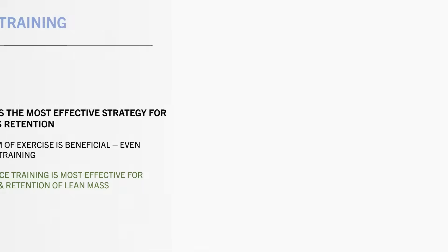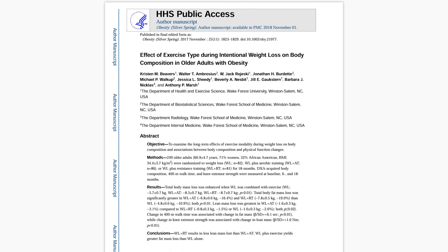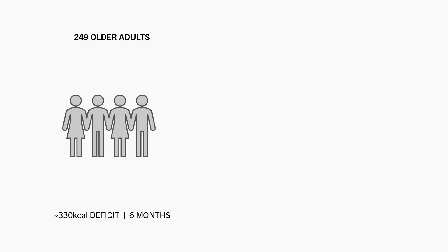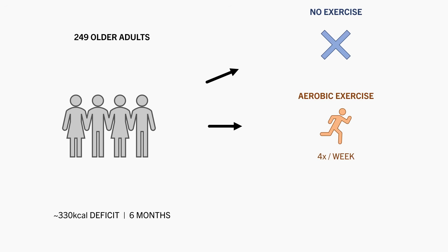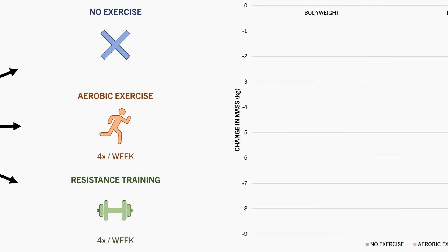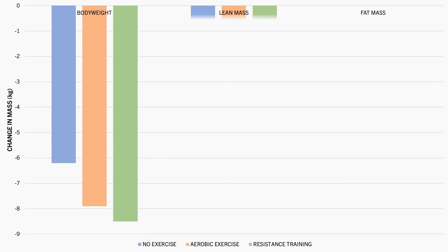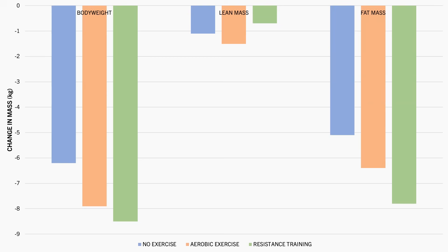This was seen in this study which compared the effects of aerobic exercise, resistance training, or no exercise during weight loss on body composition changes. 249 older adults underwent a calorie deficit of around 330 calories per day for six months while performing either no exercise, aerobic exercise four times per week, or resistance training four times per week. It was found that all groups lost significant body weight. However, the resistance training group experienced the least amount of lean mass loss, which also meant they lost the most fat as a proportion of total weight loss.